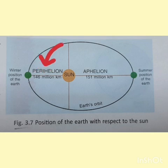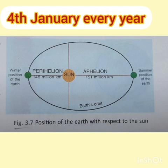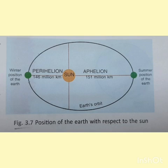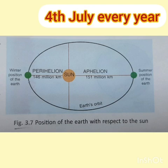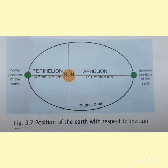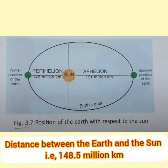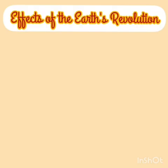When the distance between the earth and the sun is minimum — about 146 million kilometers — the earth is said to be in perihelion, meaning it is near the sun. This position is seen on 4th January every year. When the distance is maximum — about 151 million kilometers — the earth is in aphelion, meaning far from the sun, and this occurs around 4th July. For convenience, the average distance is taken as 148.5 million kilometers.